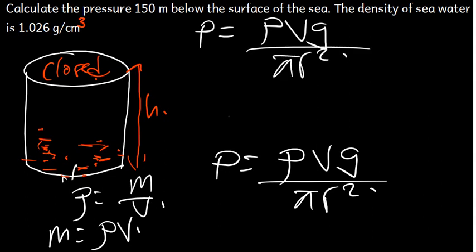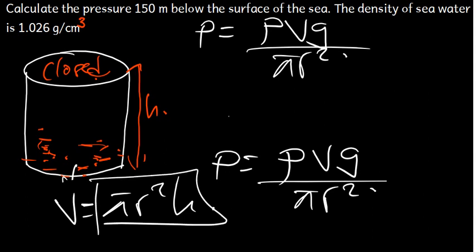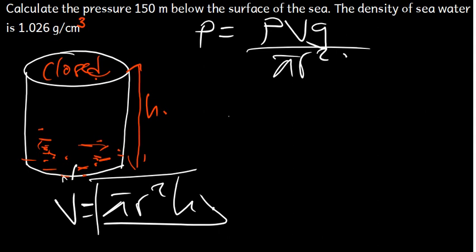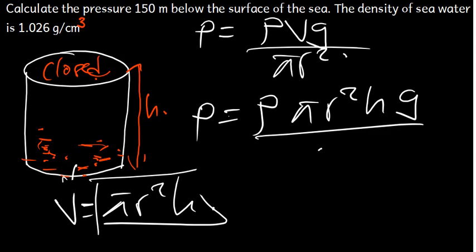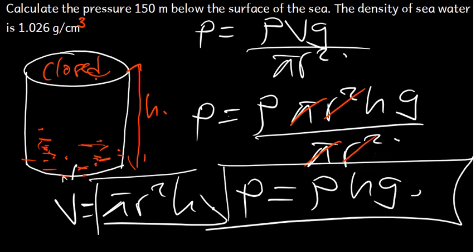The volume of the cylinder is given by pi r squared times h. So I replace volume with pi r squared times h. Therefore pressure equals density times pi r squared times h times g, all divided by pi r squared. We can cancel the pi and the r squared, leaving pressure equal to density times h times g. This is the formula for finding the gauge pressure.